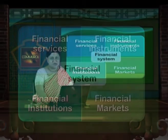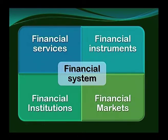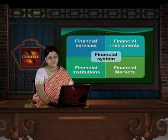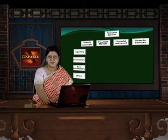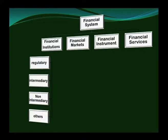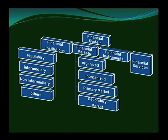A financial system comprises four things: financial services, financial instruments, financial institutions, and financial markets. Money market is one of the components of financial markets. Financial institutions include regulatory institutions like RBI, SBI, and central banks, intermediaries like all other scheduled and non-scheduled banks, and others like cooperative banks or RRBs. Financial markets can be organized markets like commercial banks, or unorganized markets like local money lenders or sahukars.